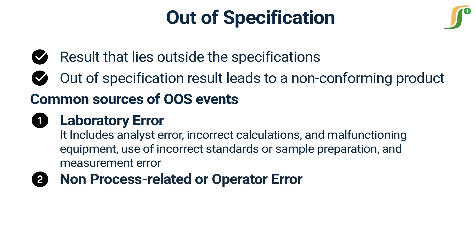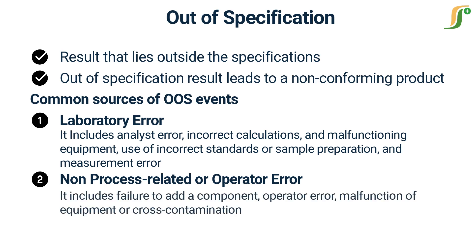The second source is non-process-related or operator error in manufacturing. This category is concerned with human or mechanical errors that occur during the manufacturing process. For example, failure to add a component, operator error, malfunction of equipment, or cross-contamination. Confirmation that this was the cause of the OOS condition would constitute a failure of a specific batch of product.